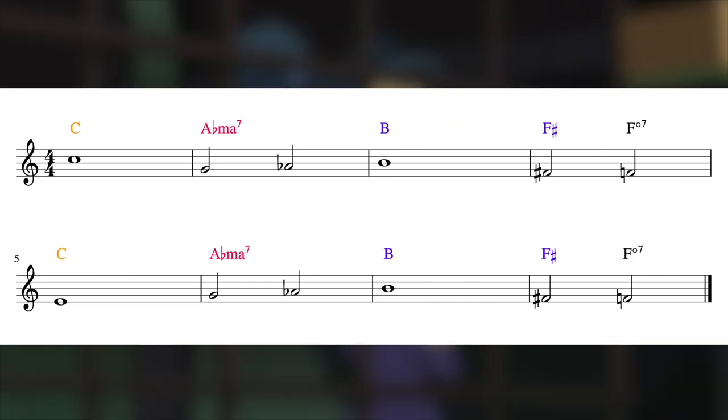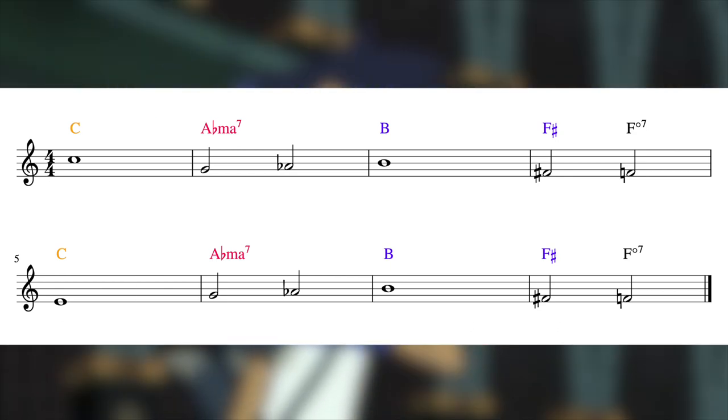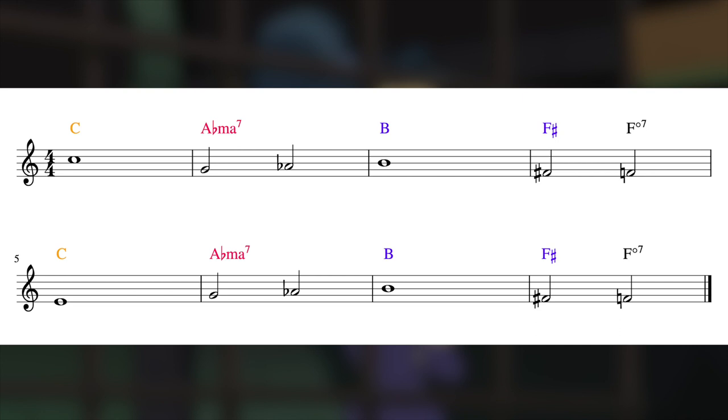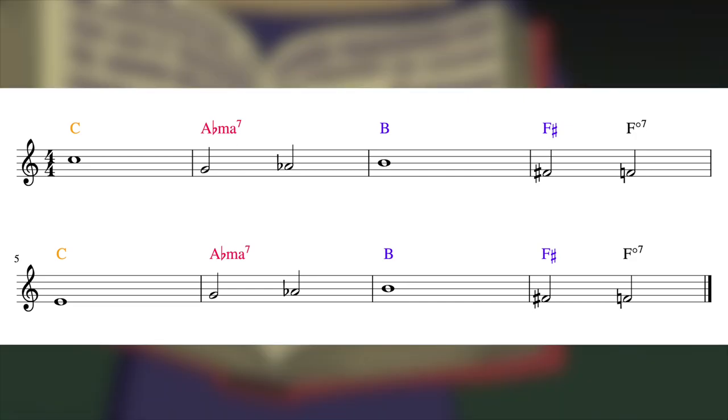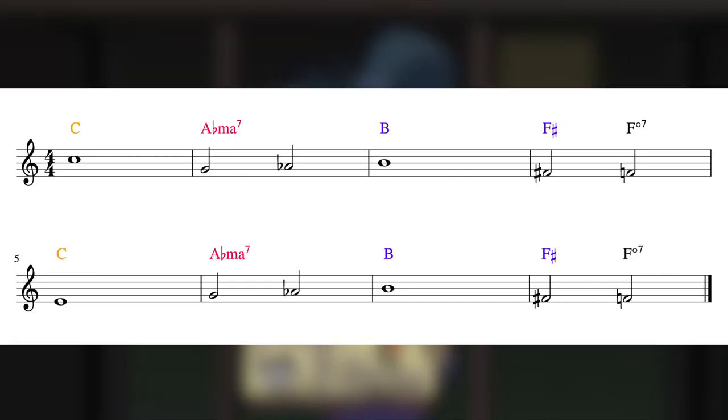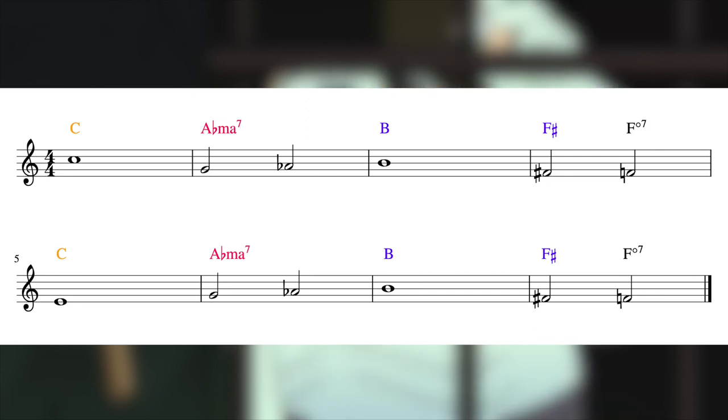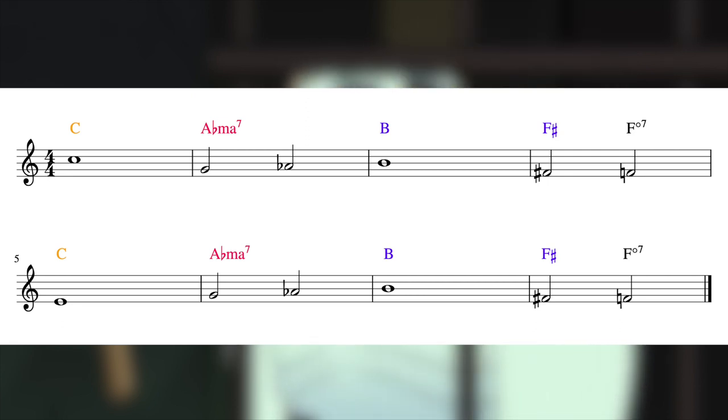We've been in C minor for the entirety of the tune up until this point, so if we were to go to another tonal center, the next logical one would be the relative major, Eb major, since they share all the same notes and chords. But instead, we resolve to the parallel major, which aside from having wacky harmonic implications, which we'll talk about in a second, has a relatively jarring yet refreshing contrast.